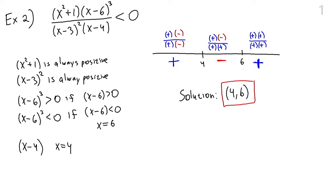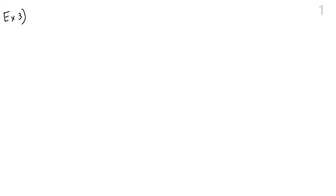In both of these examples our rational inequality was already factored. Just like with rational equations and polynomial inequalities, if our rational inequality is not factored and one side is not zero, the very first thing we need to do is factor it and make one side zero. For example, if we have two x plus 17 divided by x plus one greater than x plus five, we cannot start working with it right away — we first have to bring x plus five to the left-hand side, put everything over a common denominator, and then factor.